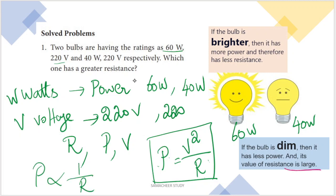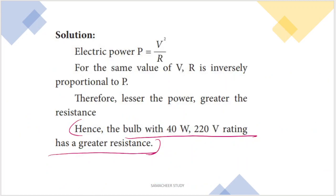Why does greater resistance mean lesser power? Because P is inversely proportional to R — the lesser the power, the greater the resistance. So the 40 watts bulb has greater resistance. That is the answer. The lesser the power, the greater the resistance.